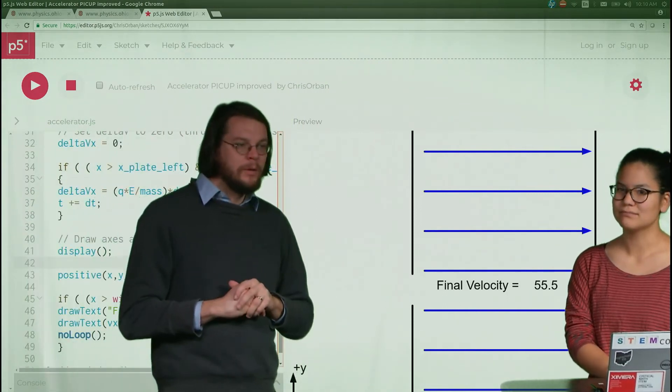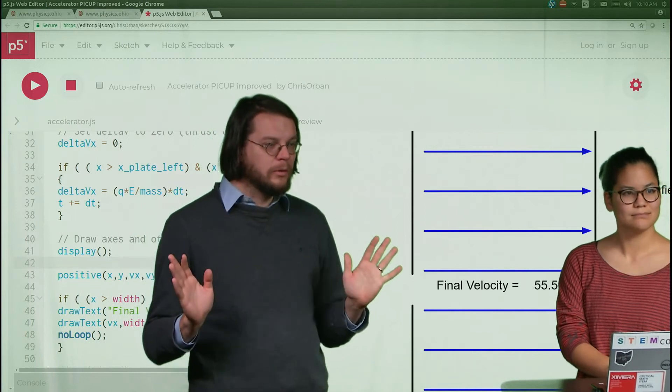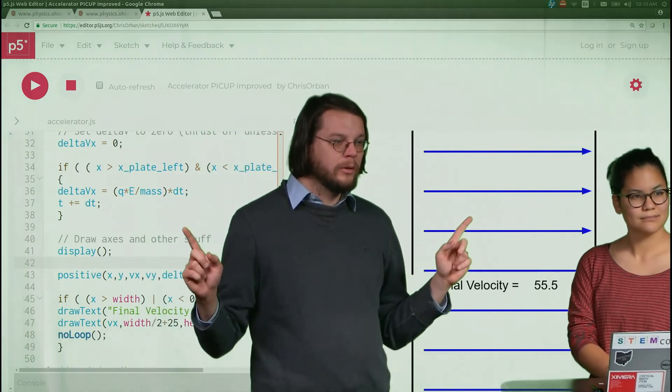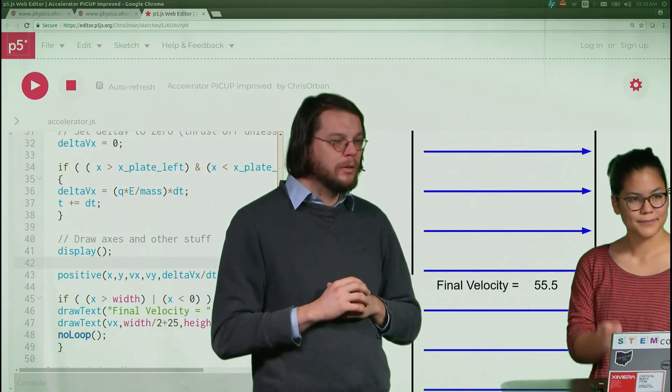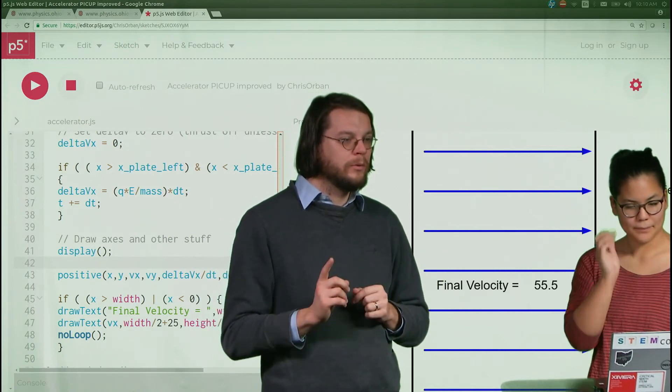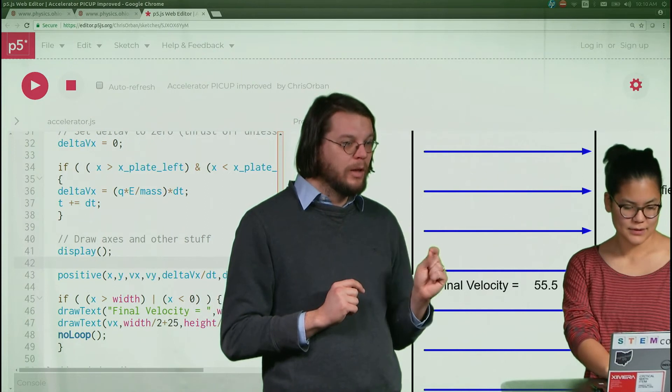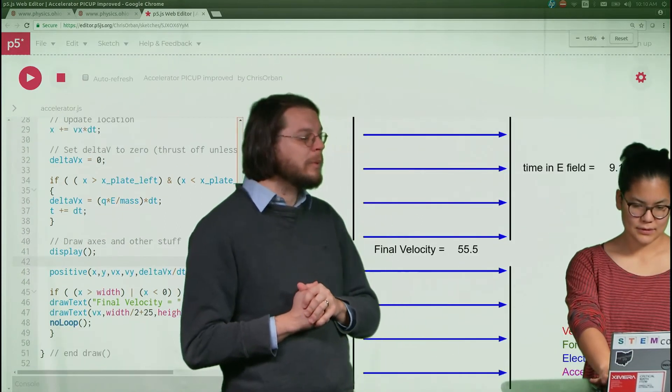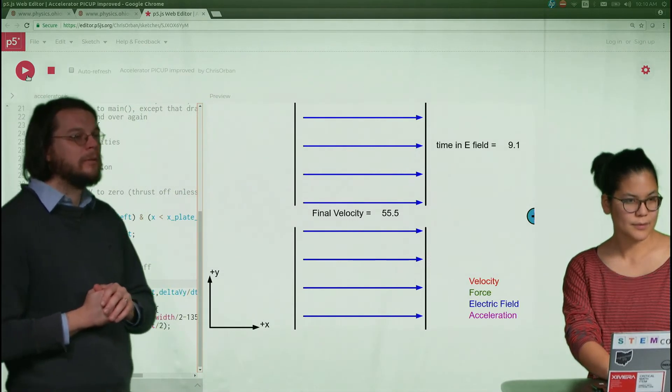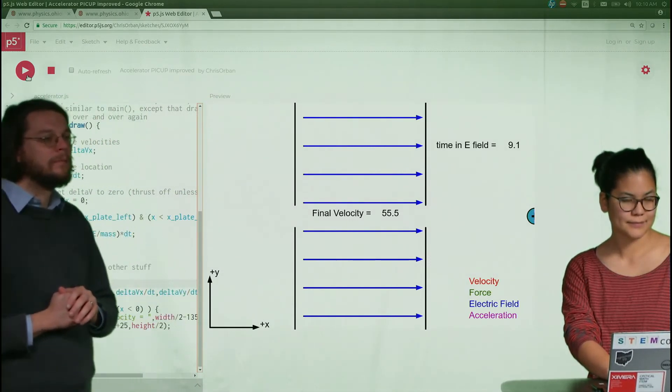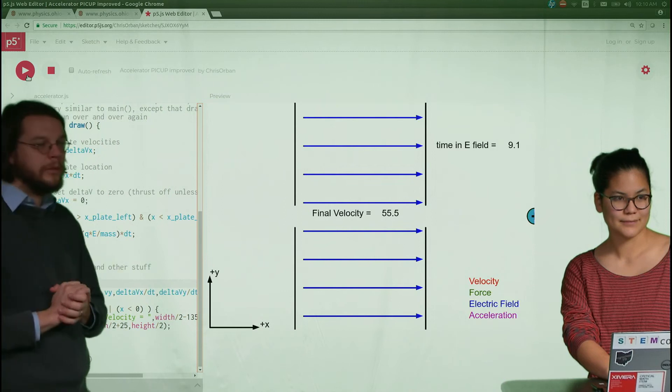So that's how the code works, that's what the code is doing. Let's just play it one more time and we'll take note of what the final velocity is, but also how much time it spent in that field. Then we'll have to go hit the numbers and see if we can figure out why we got the result that we get.